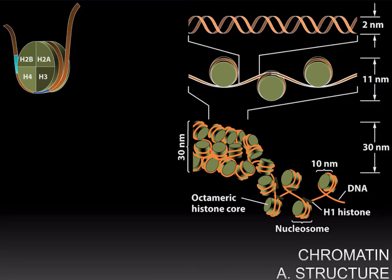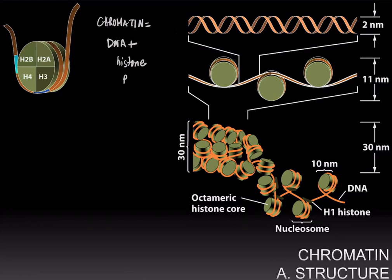One very important difference between eukaryotic gene regulation and prokaryotic gene regulation is that eukaryotic DNA is organized into chromatin. Chromatin is DNA along with histone proteins, whereas prokaryotic cells do not have chromatin. There are two main roles that chromatin plays in eukaryotic cells: one is packaging.